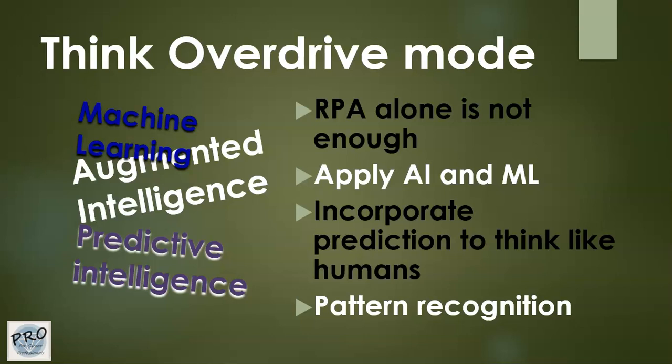Machine learning is all about understanding patterns in data. You need to look at historical data sets in order to build more prediction — to understand what the system is going to do next. In order to predict the future, we look at historical data, and that's exactly what machine learning does: look at previous historical data sets and predict future trends based on what we already know.